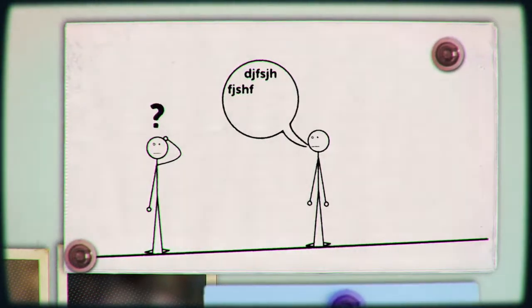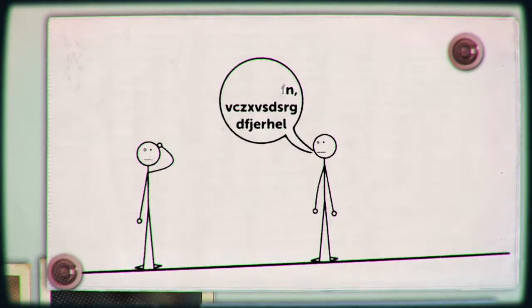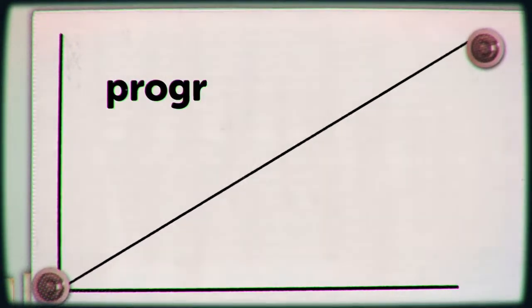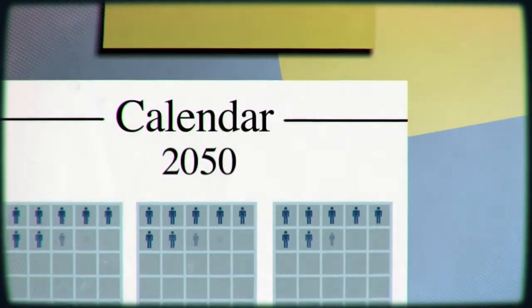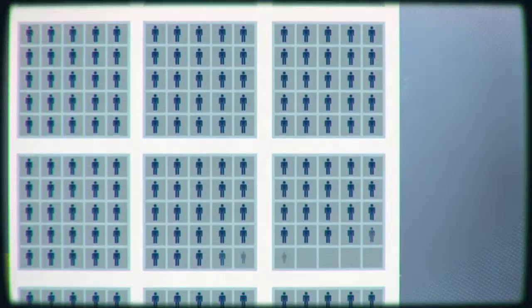Dementia causes loss of memory and mood changes. People can struggle to speak and understand others, and the condition is progressive. It just gets worse and worse. By 2050, nearly 20 million Europeans will have it.